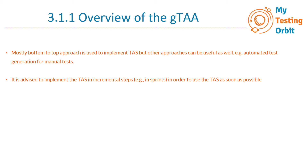It is advised to implement the test automation solution in incremental steps, for example in sprints, in order to use the TAS as soon as possible and to prove its added value. Especially in sprints, in the beginning we don't have all finalized requirements, and as we proceed the requirements keep evolving. That same approach applies to our test automation solution — we can't define everything in the beginning, so it is better to implement it in incremental steps as we proceed with our sprints.